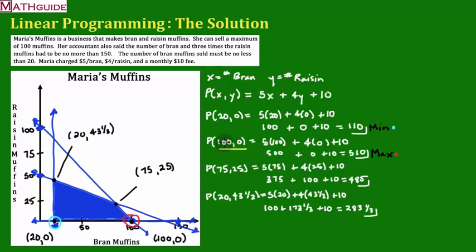remember that the 100 stands for X, X stands for the bran muffins, zero stands for Y, Y is the raisin muffins. So according to this,